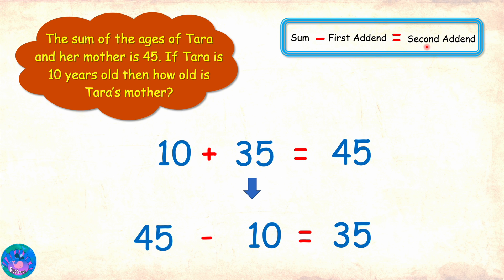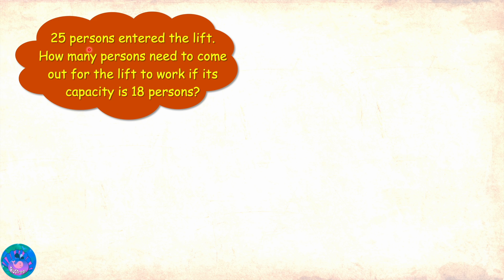Oh wow! That's interesting. Let's see another one. 25 persons entered the lift. How many persons need to come out for the lift to work if its capacity is 18 persons? So 25 is the initial number of persons. We need to take out some number, which we need to find out. Take out or remove or take away means to subtract. And when we take out this number, the answer that we will get will be 18. So this is a subtraction equation. And as we can see, minuend is 25.